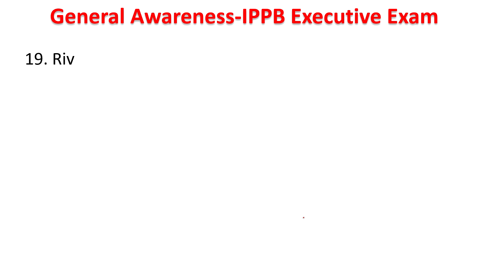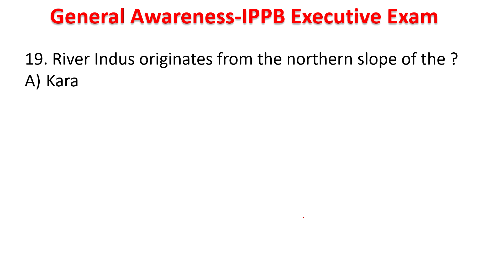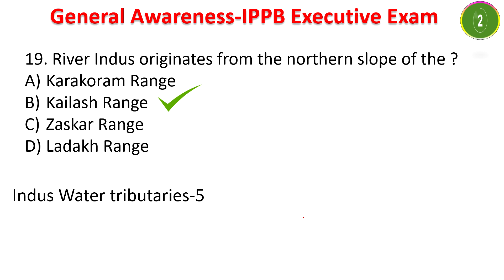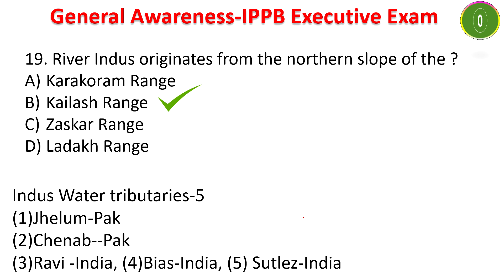Next question: River Indus originates from the northern slope of — Karakoram Range, Kailash Range, Zaskar Range, or Ladakh Range? Indus has five tributaries: Jhelum and Chenab are in Pakistan; Ravi, Beas, and Sutlej are in India. All five are Indus water tributaries.